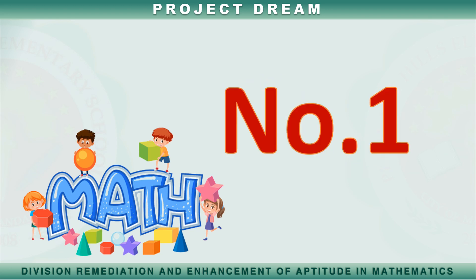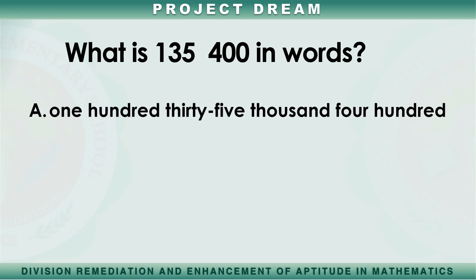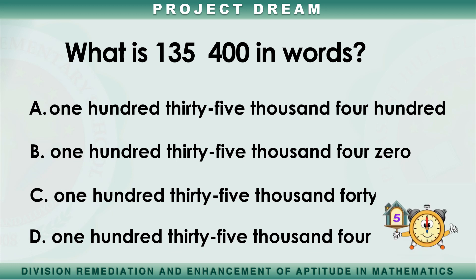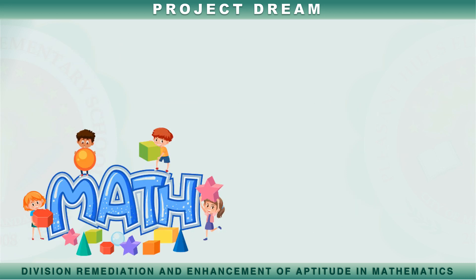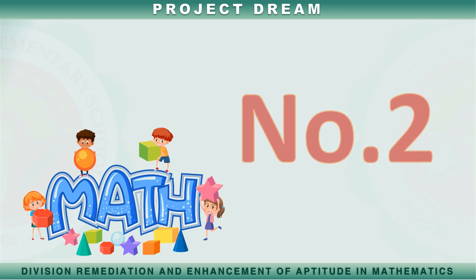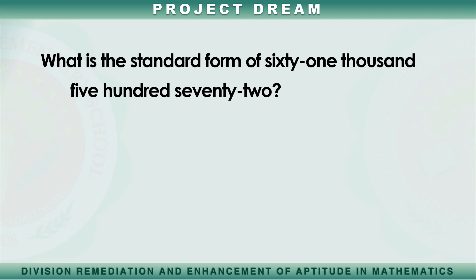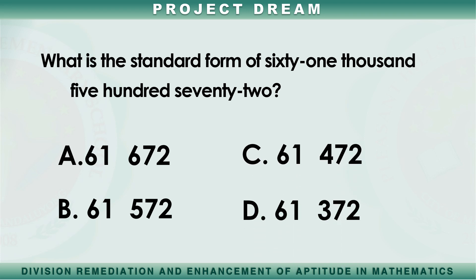Number 1: What is 135,400 in words? A, B, C, or D? The correct answer is A. Number 2: What is the standard form of sixty-one thousand, five hundred seventy-two? A, B, C, or D?